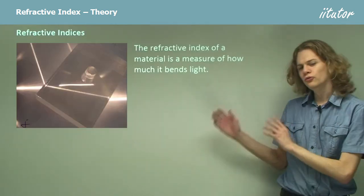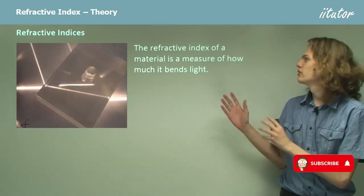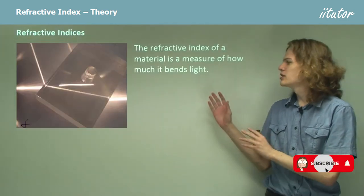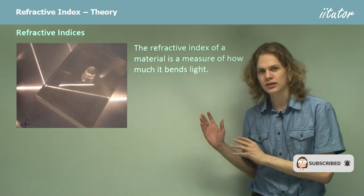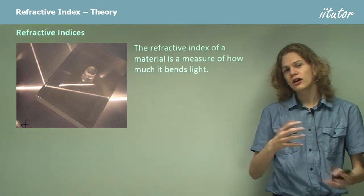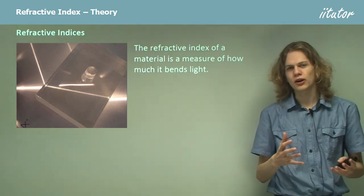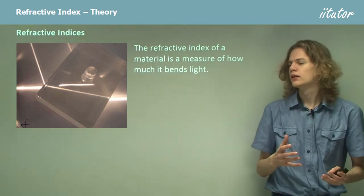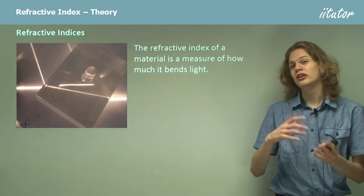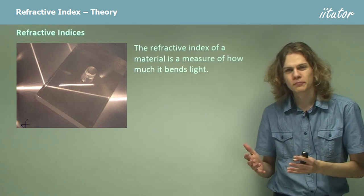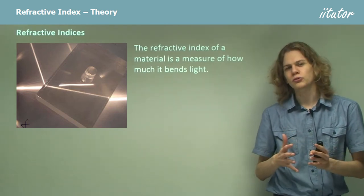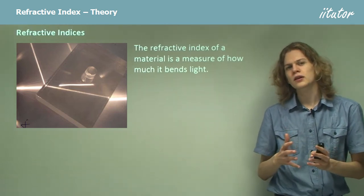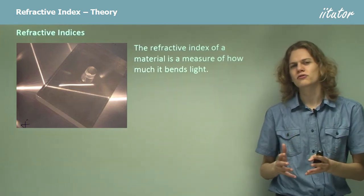The refractive index of a material is a measure of how much it bends light. If there's a large difference in refractive index, then the light will be bent a lot. If there's only a very small difference in refractive index, then the light won't bend very much.